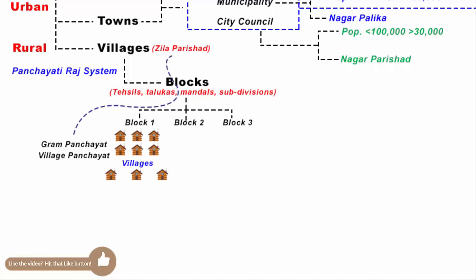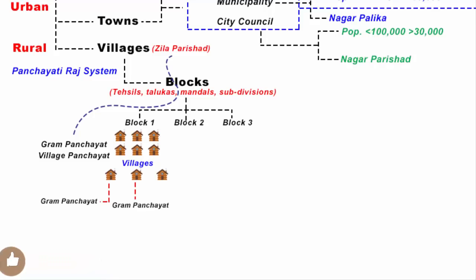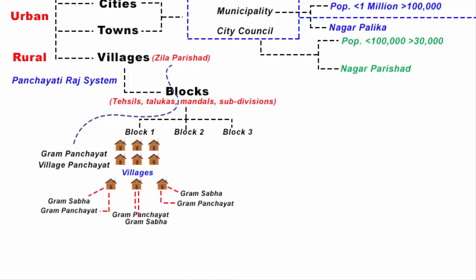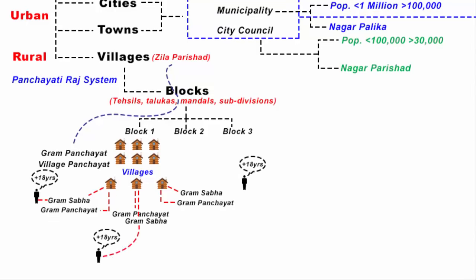As part of rural local self-government, there has to be a Gram Panchayat in every village. Every village holds a meeting called Gram Sabha — 'Gram' means village and 'Sabha' means meeting. Anyone who is 18 years old or more and has the right to vote is a member of the Gram Sabha.